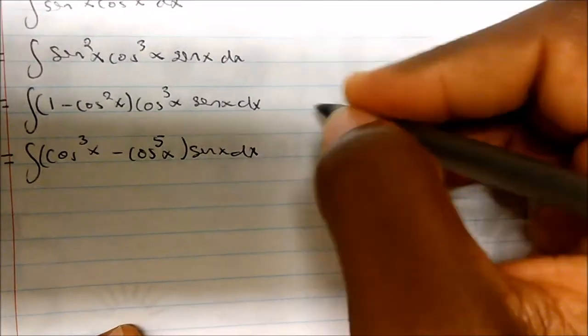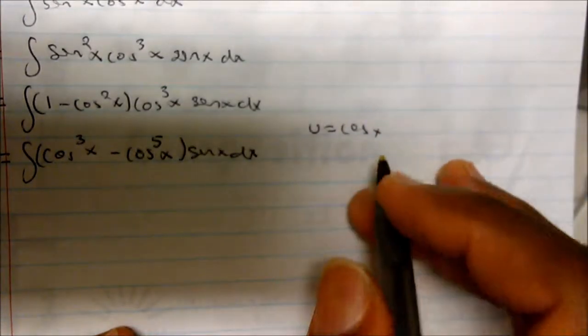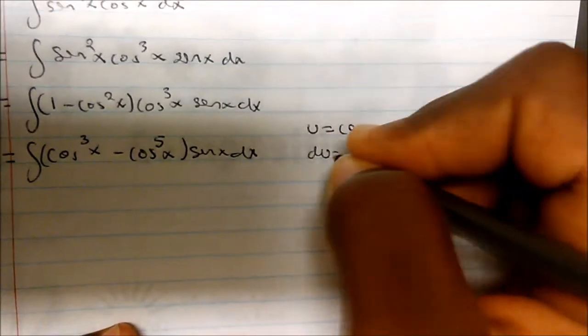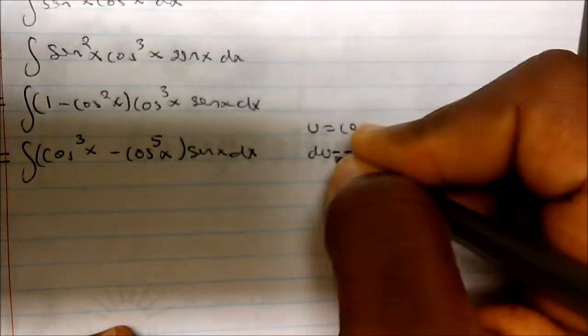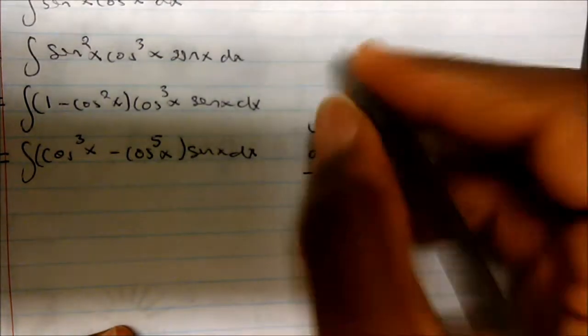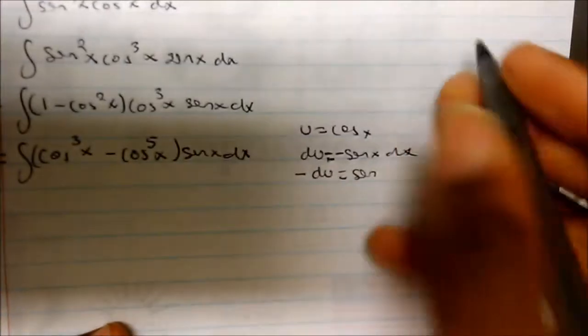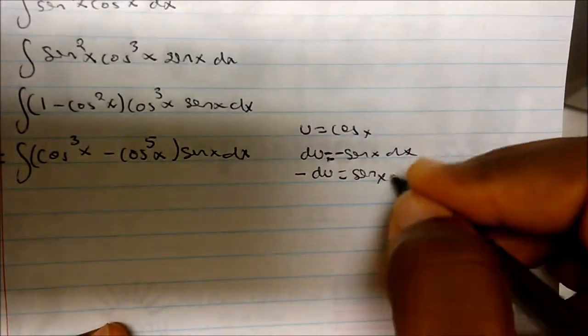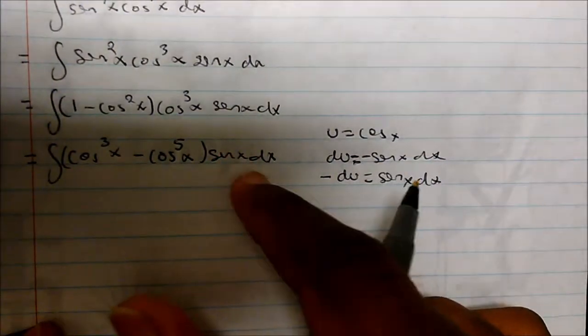Now I have a perfect u-substitution. If I set u to be cosine of x, then the derivative of that is negative sine of x dx. We can divide by a negative, so negative du equals positive sine of x dx, which is exactly what we have here.